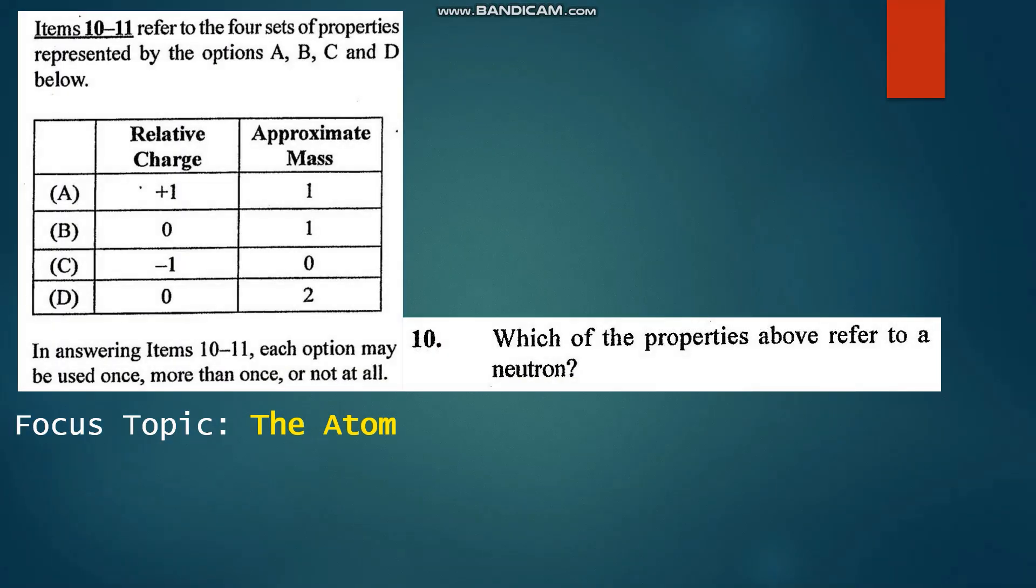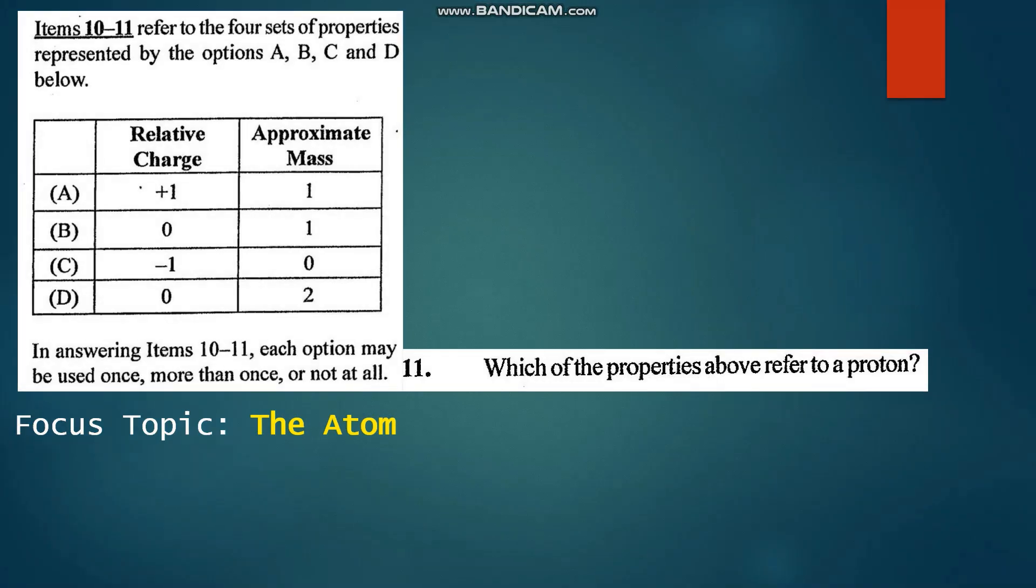Number 10 and 11 refer to the table below which shows the relative charge and approximate mass of four species. Number 10: Which of the properties above refer to a neutron? A neutron is electrically neutral and has an approximate mass of one, so that's B. Number 11: Which of the properties above refer to a proton? A proton has a relative electric charge of positive one and an approximate mass of one, so that's A.